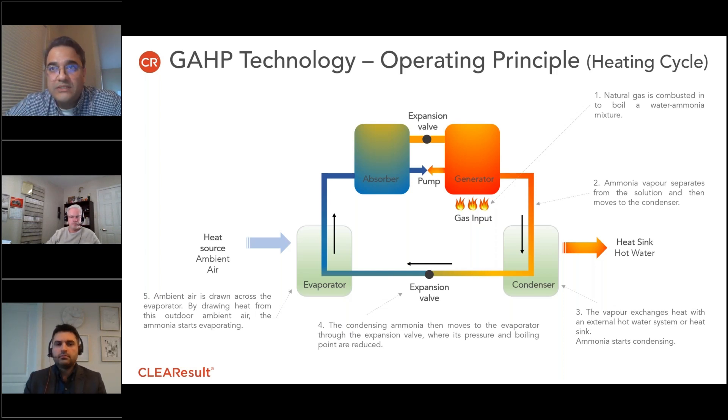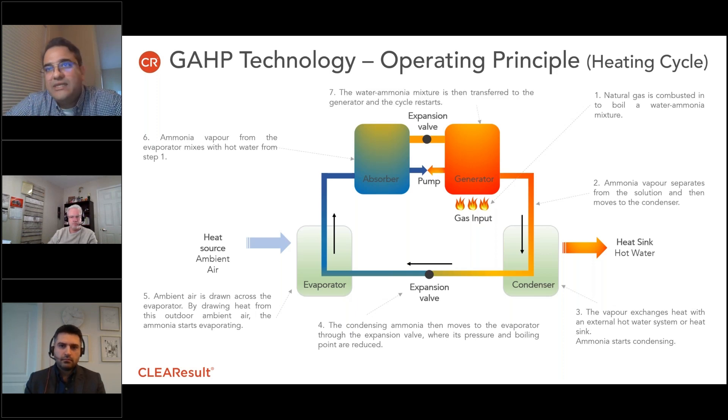It is transferred over to the ammonia, which then starts boiling, making its way to the absorber where we have water from step one. The mixture is formed again, sent back to the generator and the cycle completes.